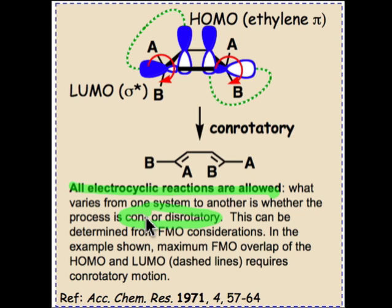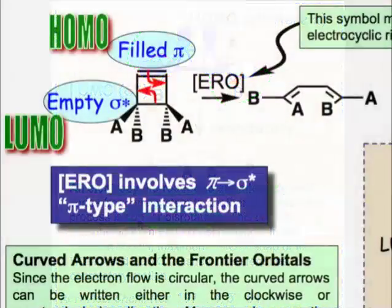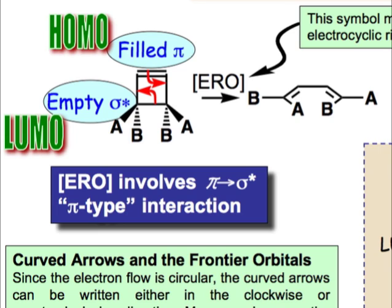This is determined by the frontier orbitals involved, and for the unimolecular process of electrocyclic rearrangement, we're going to have to dissect that molecule into HOMO and LUMO parts. Let's see what the curved arrows can tell us about the filled and empty orbitals involved. Because this is a pericyclic reaction, there's a circular flow of electrons, and consequently there really isn't a first arrow and a second arrow — it's hard to define what's the starting point.